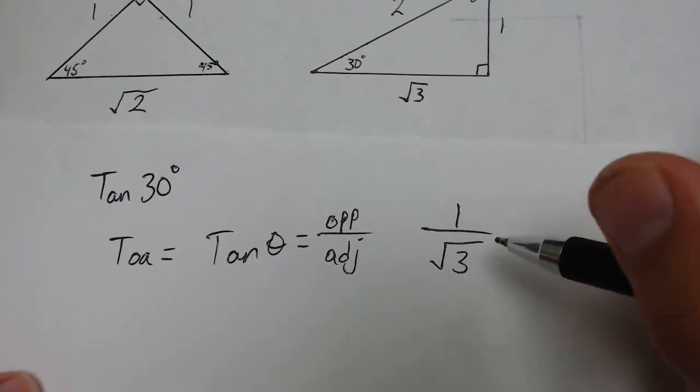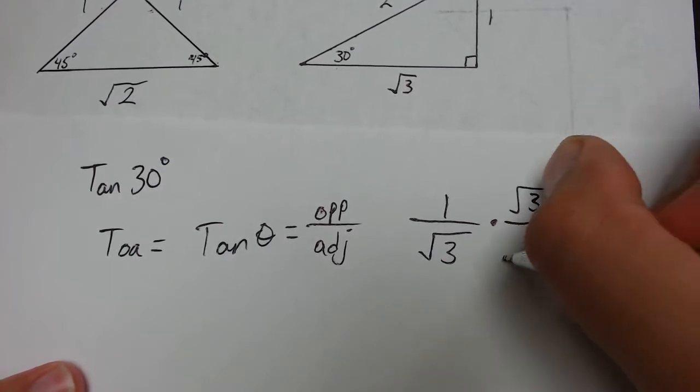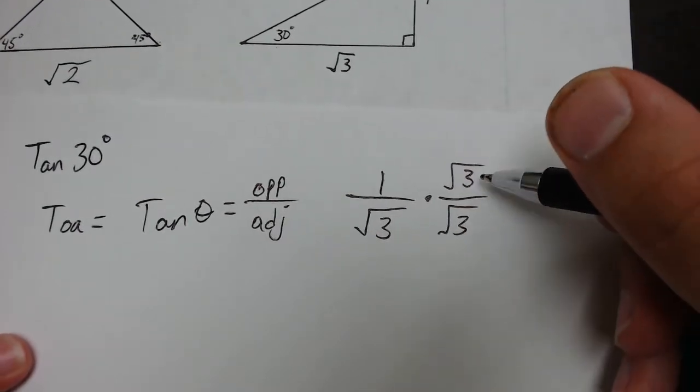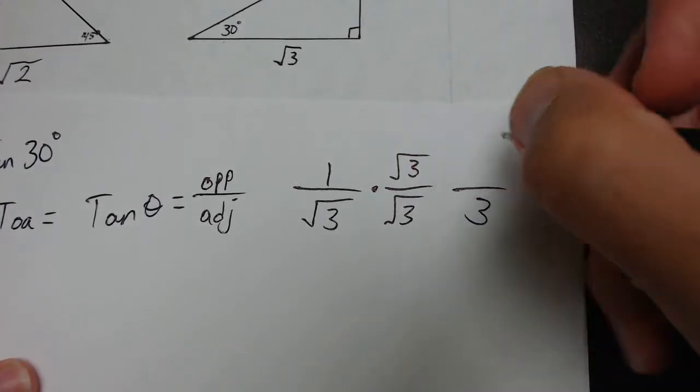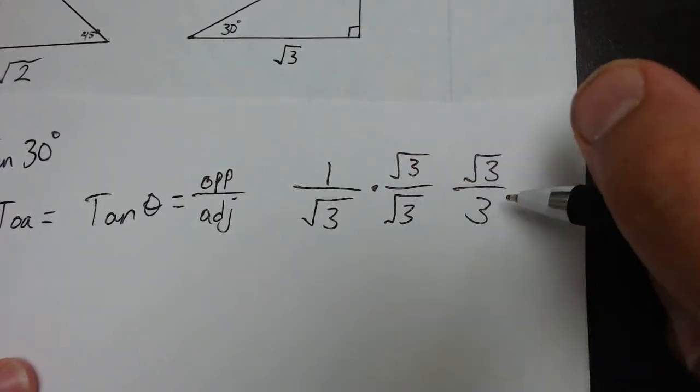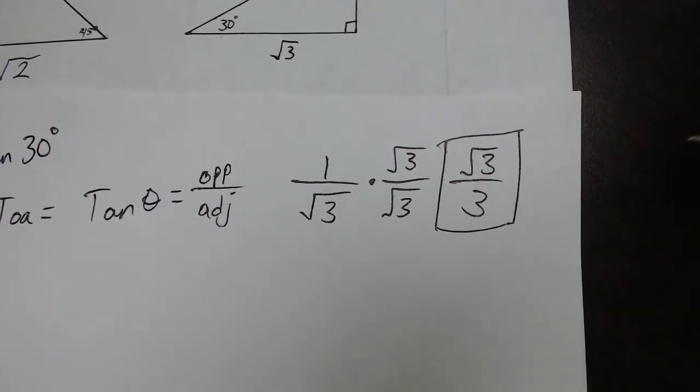So the tangent of 30 degrees is going to equal 1 over square root of 3. Now the only problem is we can't have a radical in the denominator, so we have to rationalize this. Rationalize it by multiplying by square root of 3 over square root of 3. The denominator now becomes 3, and the numerator becomes square root of 3. So the tangent of 30 degrees is root 3 over 3.